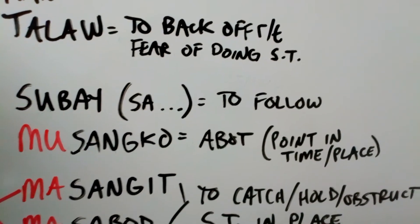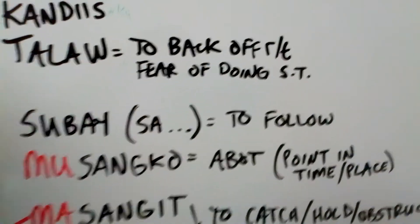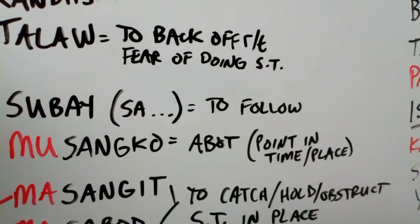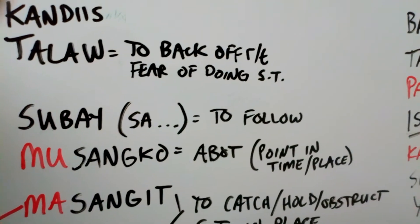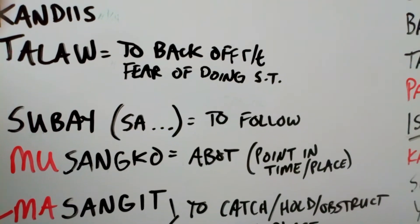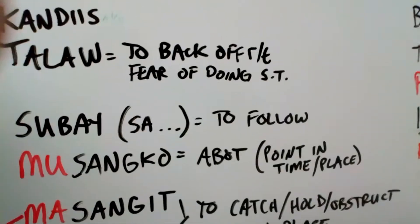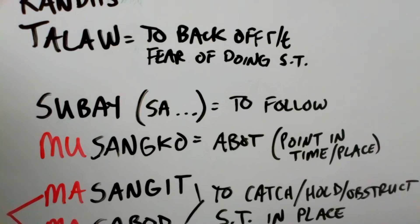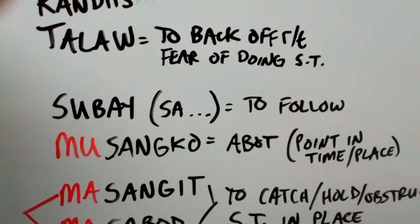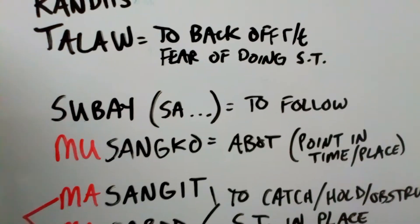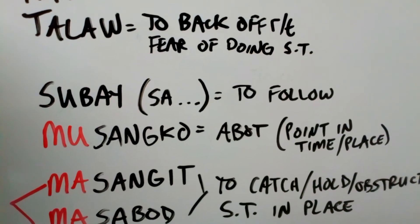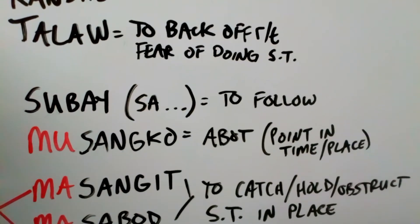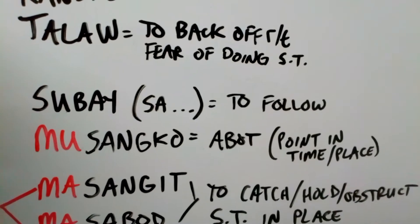Musangko — sangko is the root word and it means to reach or to arrive. But it means to reach or arrive at a specific point in time or place. A related word is abot. Musangko and abot — murak pareha silang duhak — they're kind of like the same, those two. They're both related words. But sangko is specific to a point in time and place. Musangko.